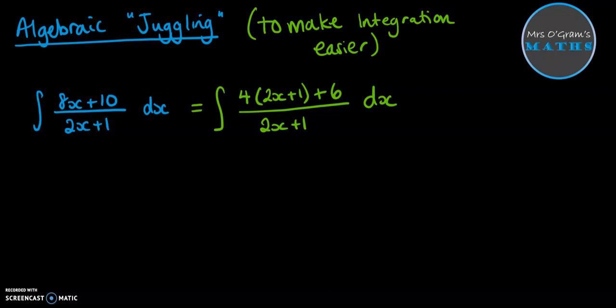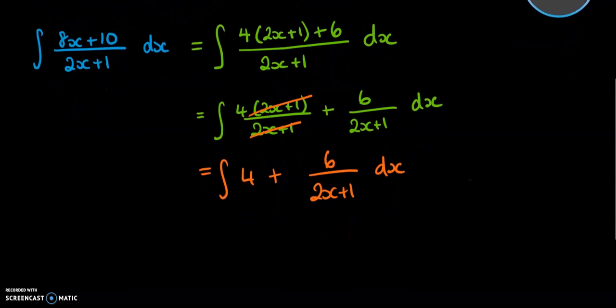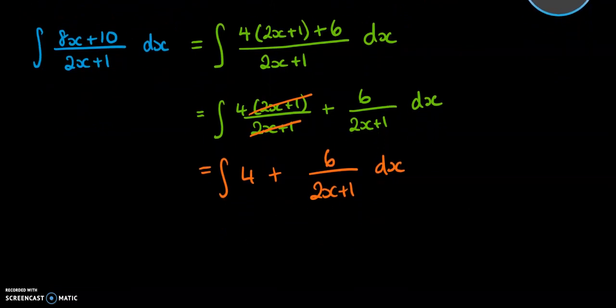And once we've done that, we can separate these out into two separate fractions. So we can put this as the 6 and the other part of that top bit as two separate pieces, both over 2x plus 1, similar to how we've seen in some of the other videos. And then once we've got this, you can see we can cancel that 2x plus 1 on the top and the bottom there. So it's now just the integral of 4 plus 6 over 2x plus 1. And then with that, we can actually integrate these terms now.